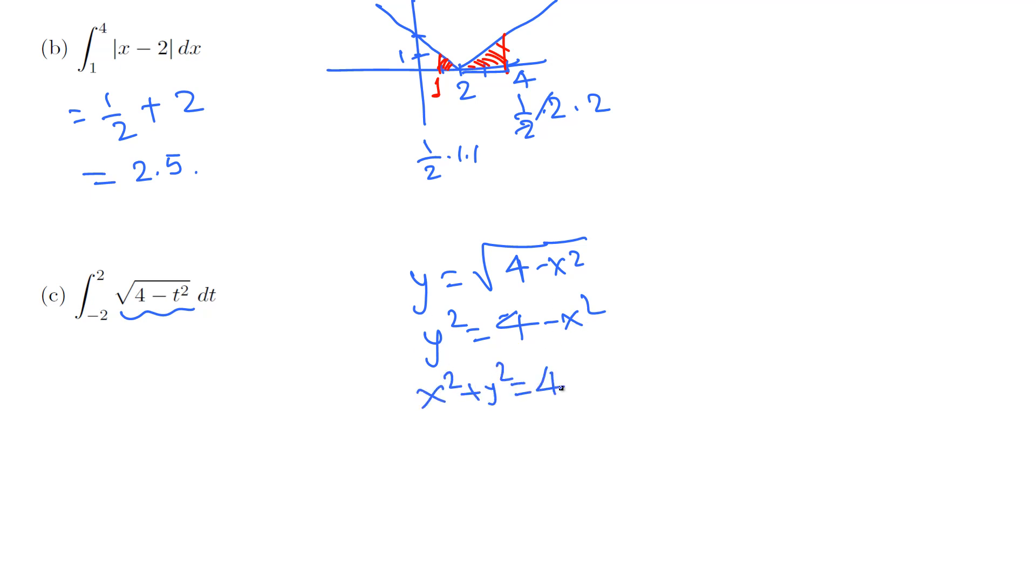This is a circle centered at the origin with radius 2. You can simply graph this function in your calculator, and you get a semicircle from negative 2 to 2.